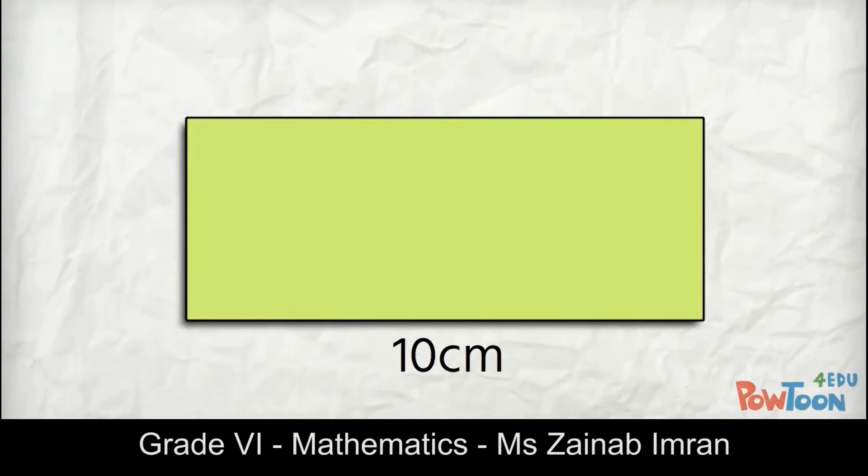So let's review. To find the area of a rectangle, multiply two adjacent sides: length times width. Put the unit of measurement and show it as squared.